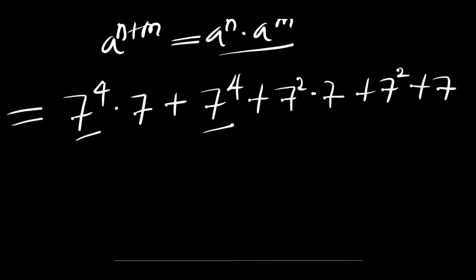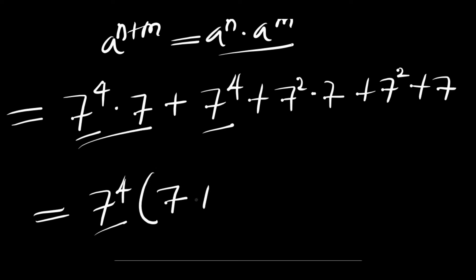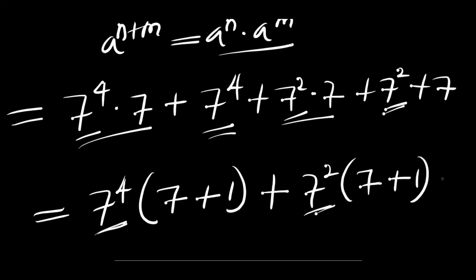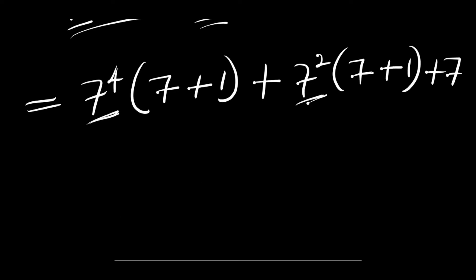We can factor out 7 power 4 — that means we are going to have 7 power 4 times (7 plus 1). Then we have 7 power 2 here and 7 power 2 here, so we factor out 7 power 2 times (7 plus 1).